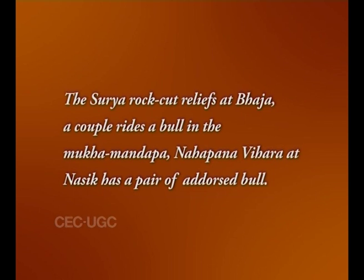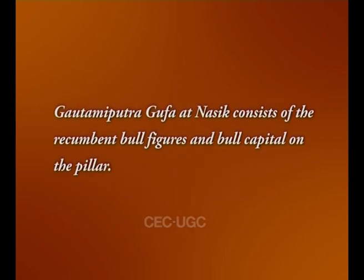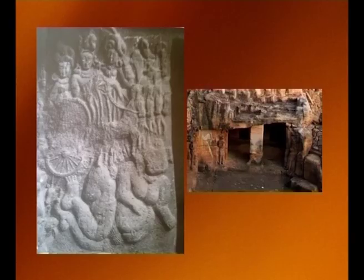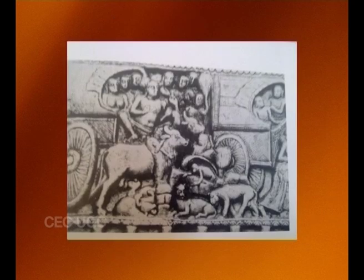The Surya rock-cut relief at Bhaja shows a couple riding a bull in the Mukha Mandapa. Nahapana Vihara at Nasik has a pair of adorned bulls. Gautamiputra Guffa at Nasik consists of recumbent bull figures and bull capitals on the pillars. Ananta Guffa at Khandagiri near Bhuvaneshwar too has a bull relief. The Buddhist railings of Amravati, Goli, Nagarjuna Konda and Gandhara are also adorned with figures of the bull in relief.